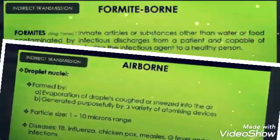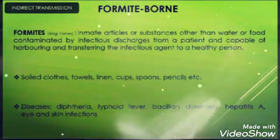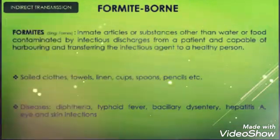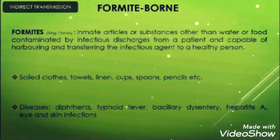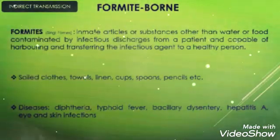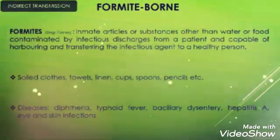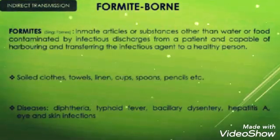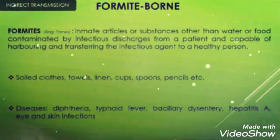Fomite-borne transmission means through infected articles that we use. This includes inanimate objects or substances, other than water or food, contaminated by infectious discharges from a patient and capable of harboring and transferring the infectious agent to a healthy person — such as soil, clothes, towels, linen, cups, spoons, pencils, etc. Diseases transmitted this way include diphtheria, typhoid fever, bacillary dysentery, hepatitis A, and eye and skin infections. Through contact with these infectious objects, it is liable to get infections.